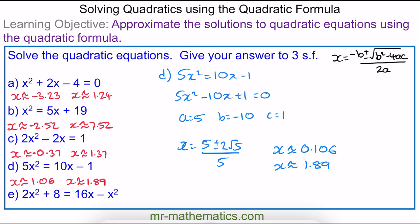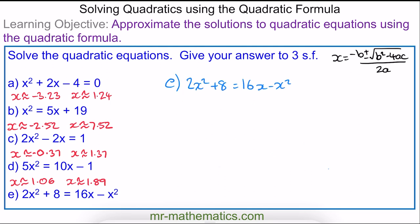Finally, for question e, we make the equation equal to 0, giving 3x² − 16x + 8 = 0. This gives approximate solutions of x ≈ 0.558 and x ≈ 4.77.